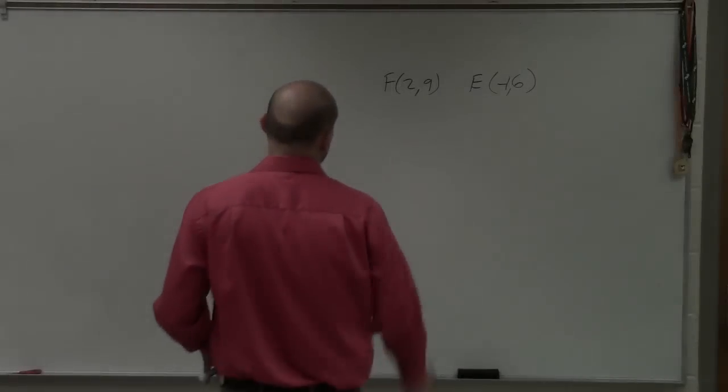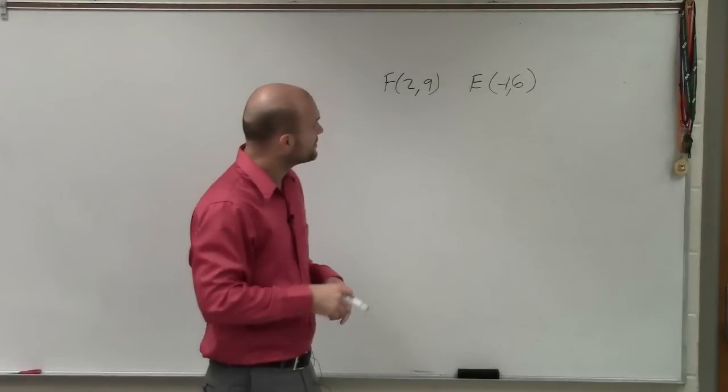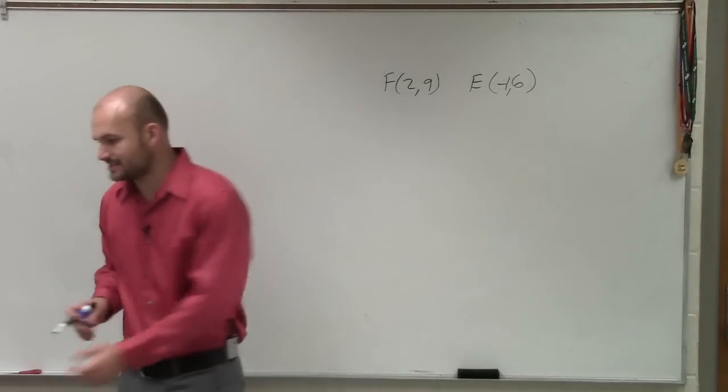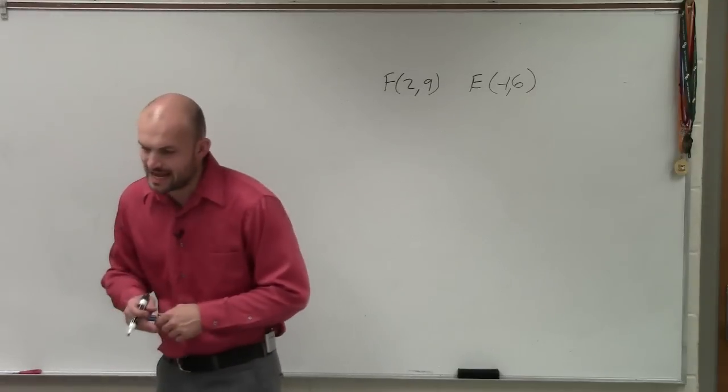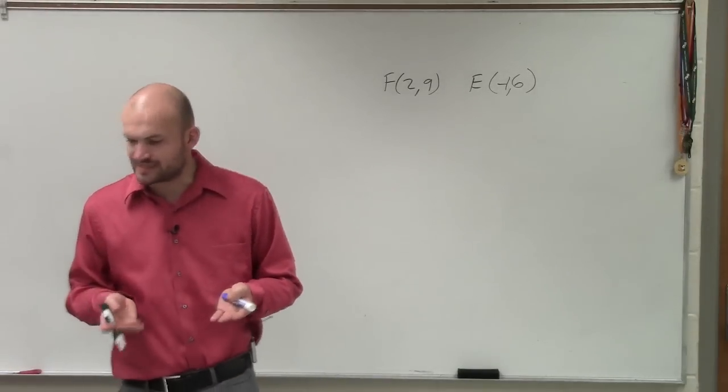Ladies and gentlemen, what I have here is F is 2 comma 9, E is going to be negative 1 comma 6. And let me just go back to the directions. So it says find the coordinates on the missing endpoint if E is the midpoint of DF.